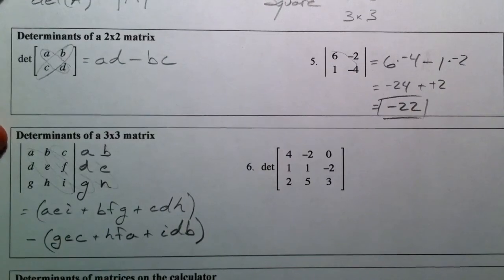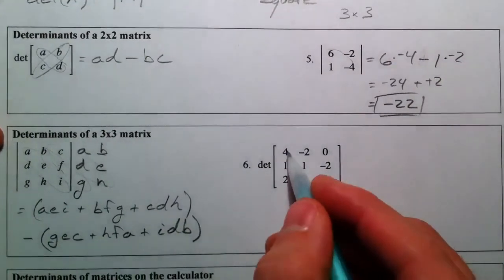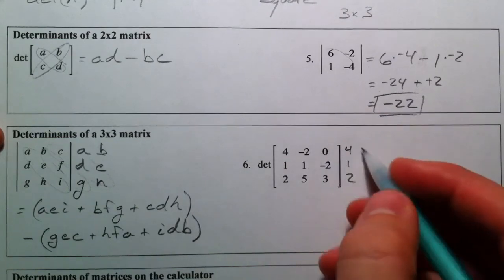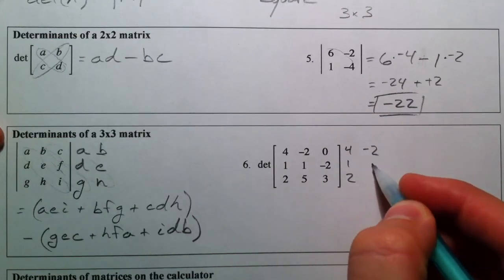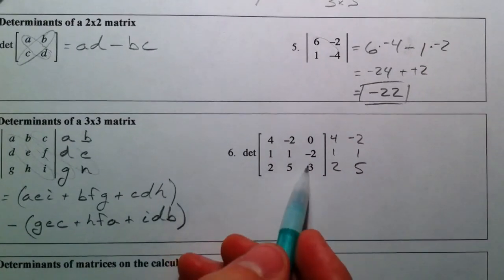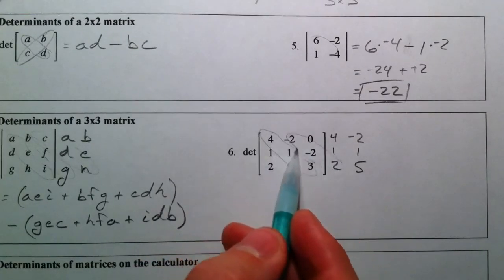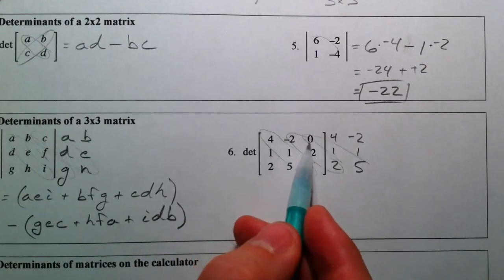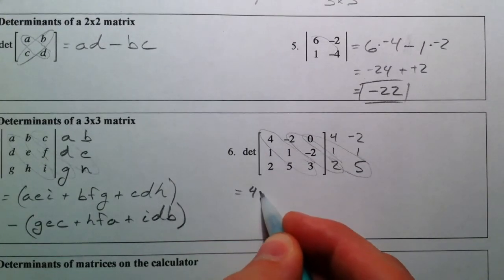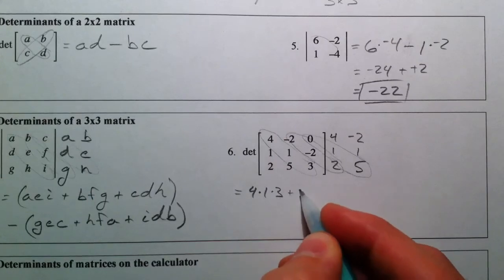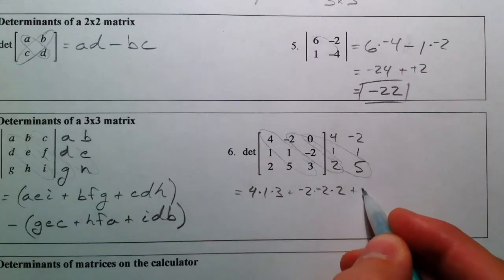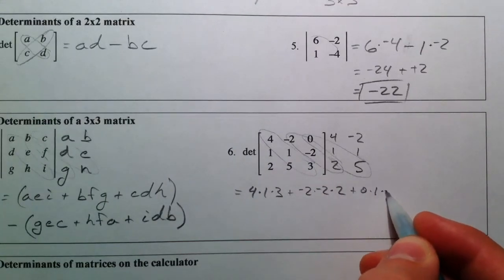So we're going to do it. Here we go. We repeat our matrix: 4, 1, 2 and negative 2, 1, 5, extending with columns 4, 1, 3. So we're going to get 4 times 1 times 3, plus negative 2 times negative 2 times 2, plus 0 times 1 times 5.